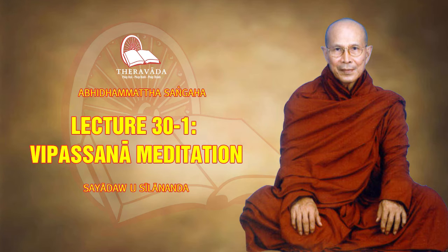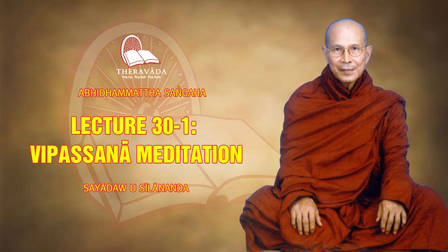Now in more detail: the first purification is purification of virtue — purification of sila. On page 347, it is explained as consisting of four kinds of purified virtue: one, virtue regarding restraint according to the Patimokkha; two, virtue regarding restraint of the sense faculties; three, virtue consisting in purity of livelihood; and four, virtue connected with the use of requisites. These are for monks.